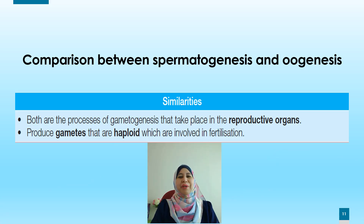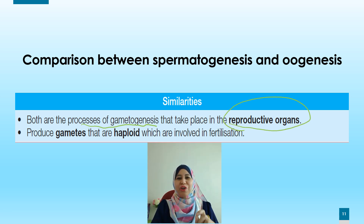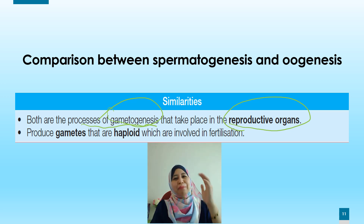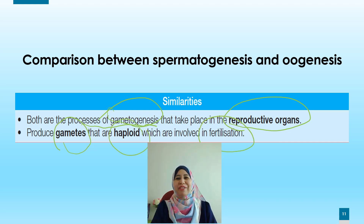Now we look at the comparison between spermatogenesis and oogenesis. First, the similarities: both processes take place in the reproductive organ, and both produce gametes that are haploid, which will be involved in the process of fertilization.